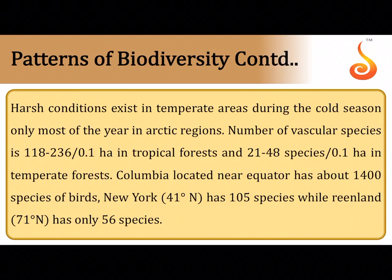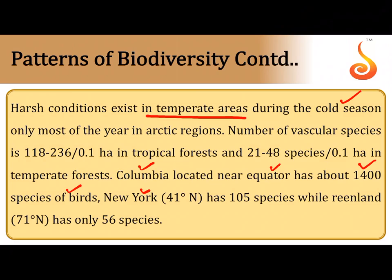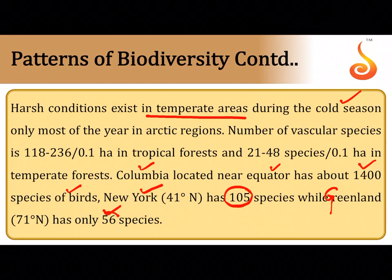In temperate areas, conditions are very harsh — extremely hot in summer and very cold in winter — which explains why species numbers decrease with latitude. For example, Colombia (near the equator in South America) has 1,400 species of birds; New York has 105 bird species; and Greenland (higher in the northern hemisphere) has only 56 species of birds — showing a clear latitudinal decline from 1,400 near the equator to 56 near Greenland.